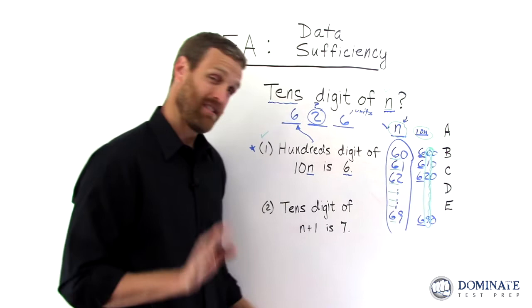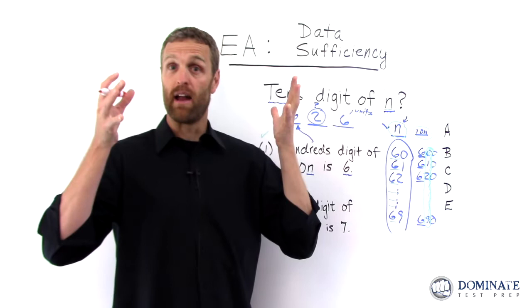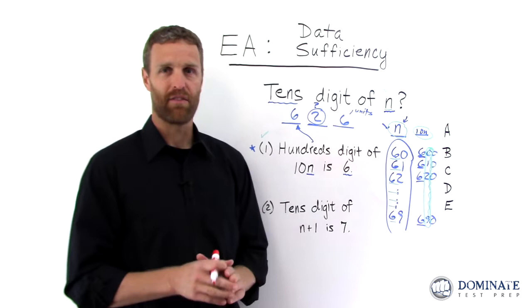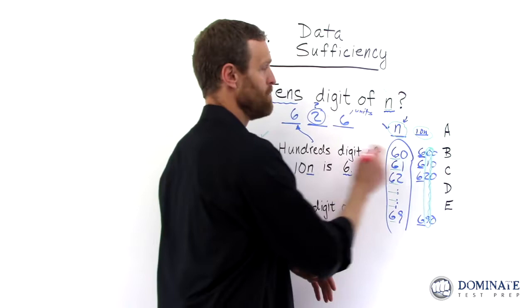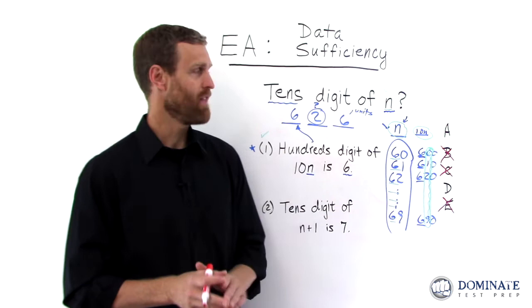So again, part of what makes it challenging, lots of moving parts here. You've got n's and 10n's, and so you have to stay organized. And the best way to stay organized, I like to make columns on my scratch paper and write out the different possibilities and confirm that, yes, the tens digit of n will be the same all the time. So now we can get rid of B, C, and E. By the way, if you don't understand why, that's just second nature. You have to understand the methodology of data sufficiency. Don't have time to go into all of that now. And now we simply evaluate statement number 2 in isolation.